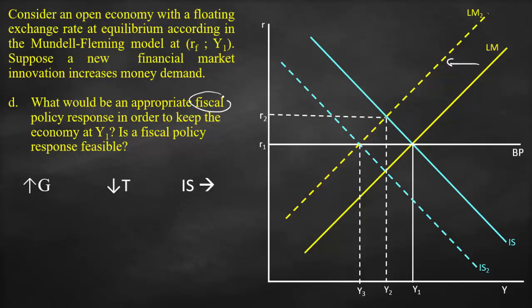So this means that if I will try to shift IS curve to the right, we would never reach our equilibrium point where IS, the new LM, which is LM2, and balance of payment curve intersect. Consequently, fiscal policy will not be feasible in this scenario